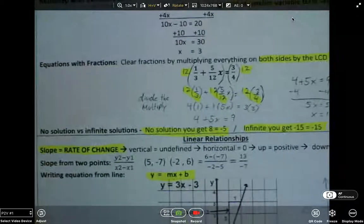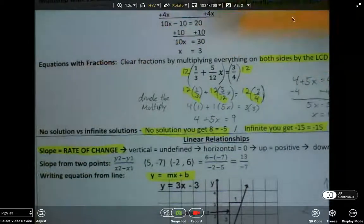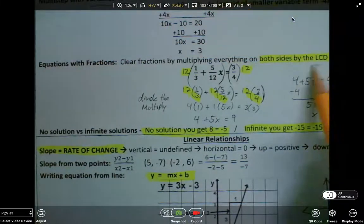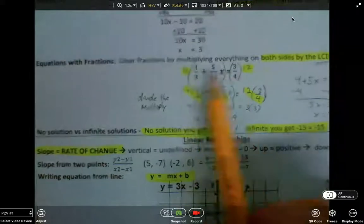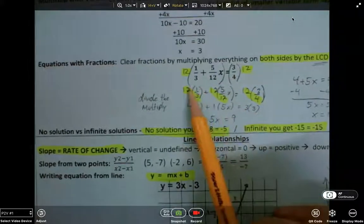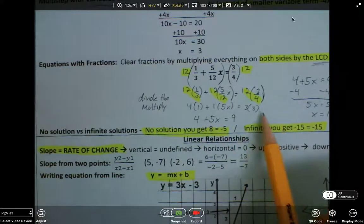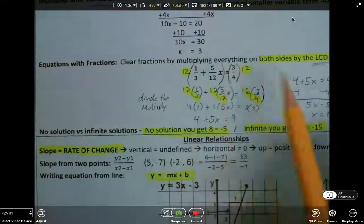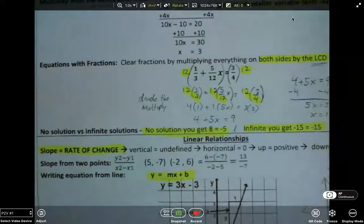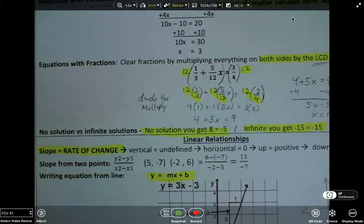We also, in eighth grade, did fraction equations where you have to clear the fractions by multiplying by the LCD. So here we multiply both sides by 12. 12 divided by 3 is 4, and 4 times 1 is 4. 12 divided by 12 is 1, and 1 times 5 is 5, and so on. It clears the fractions. Same thing with decimals. So you can just multiply by the highest power of 10.